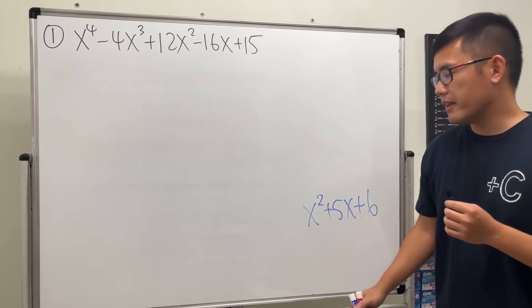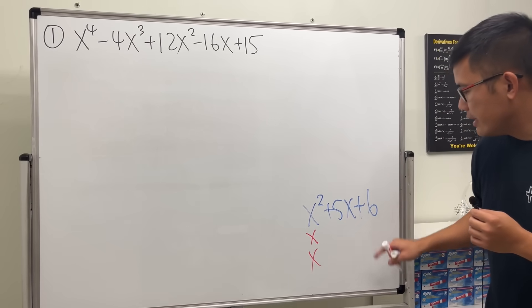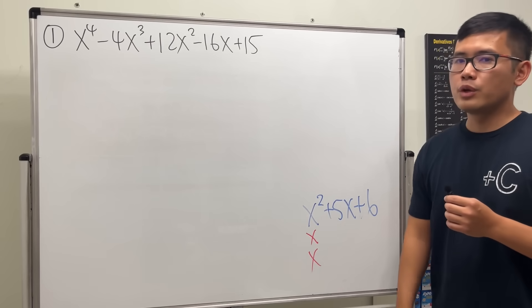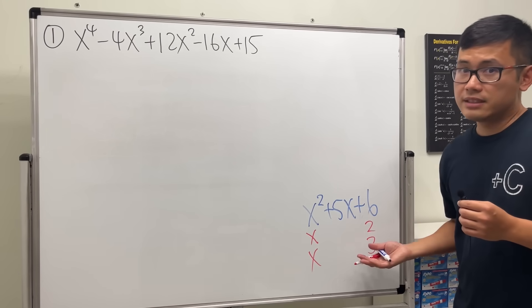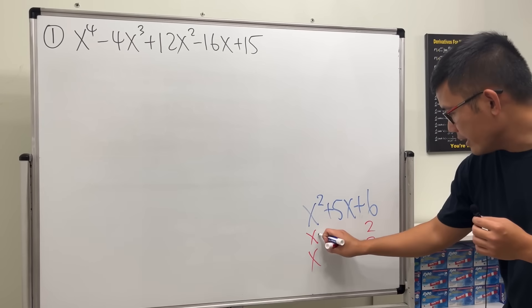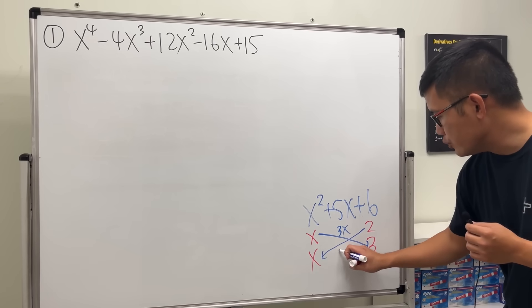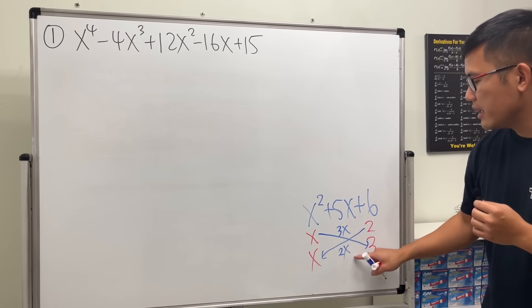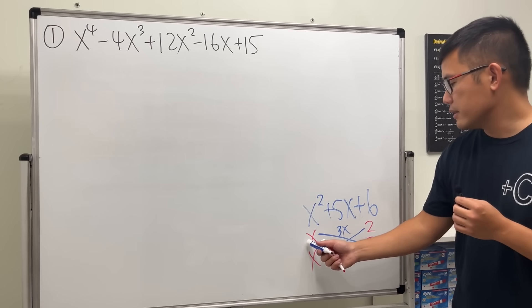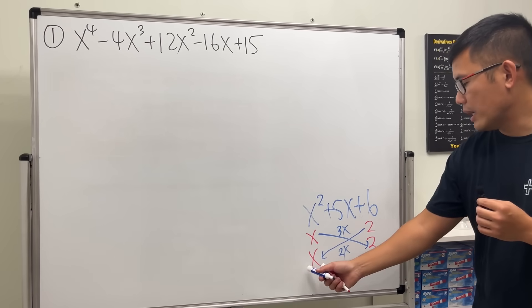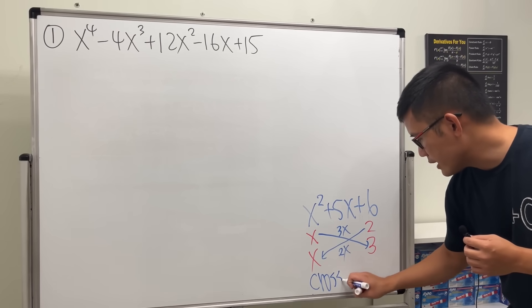One way to do this is the cross method. You break down x squared as x times x, then look at 6: what times what gives us 6? Let's use 2 and 3. We take this times that which is 3x, and this times that which gives us 2x — together we get 5x, so we have the correct combination. The factors are x plus 2 and x plus 3. This is the cross method.